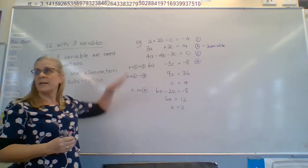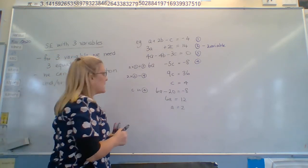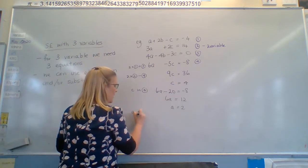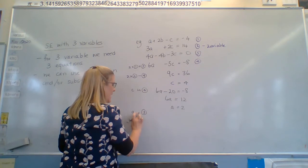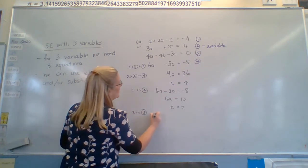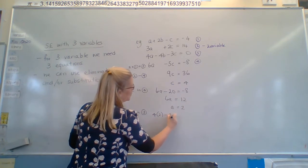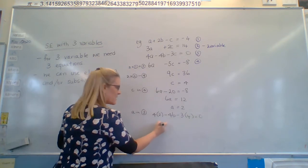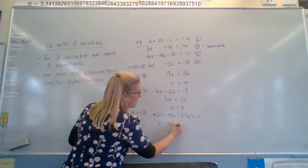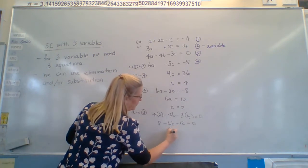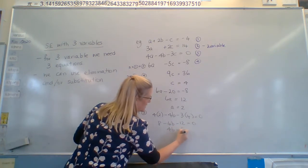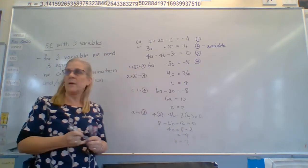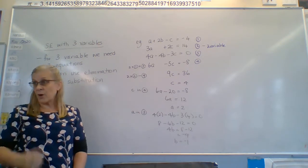Now I've got c and a. I go back up to either one or three and find out what b is. So I'm going to go into three only because when I've got all three I'm going to substitute them to the other one. a into three gives me four times two minus four b minus three times four equals zero. So that's eight minus four b minus twelve equals zero. Four b will equal eight minus twelve which is negative four. So b is negative one.